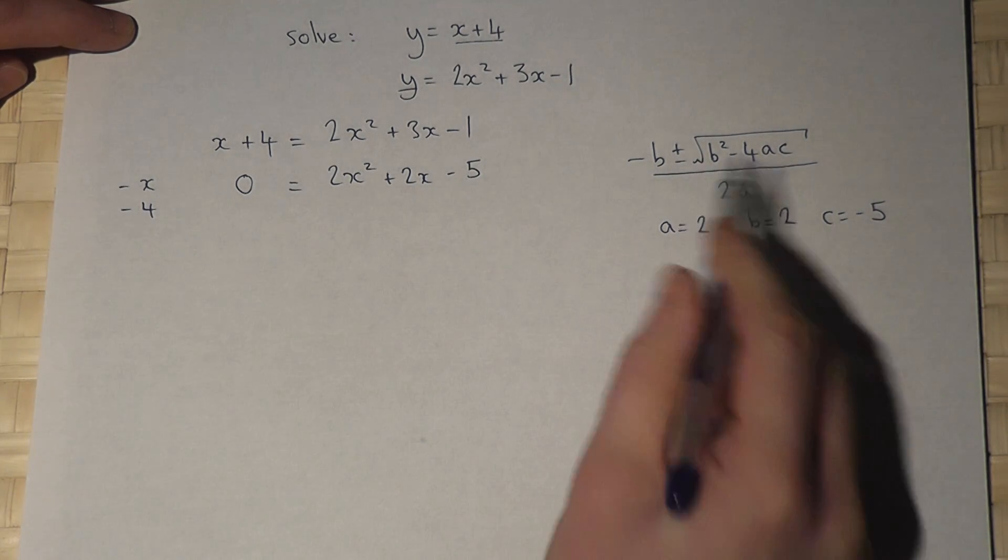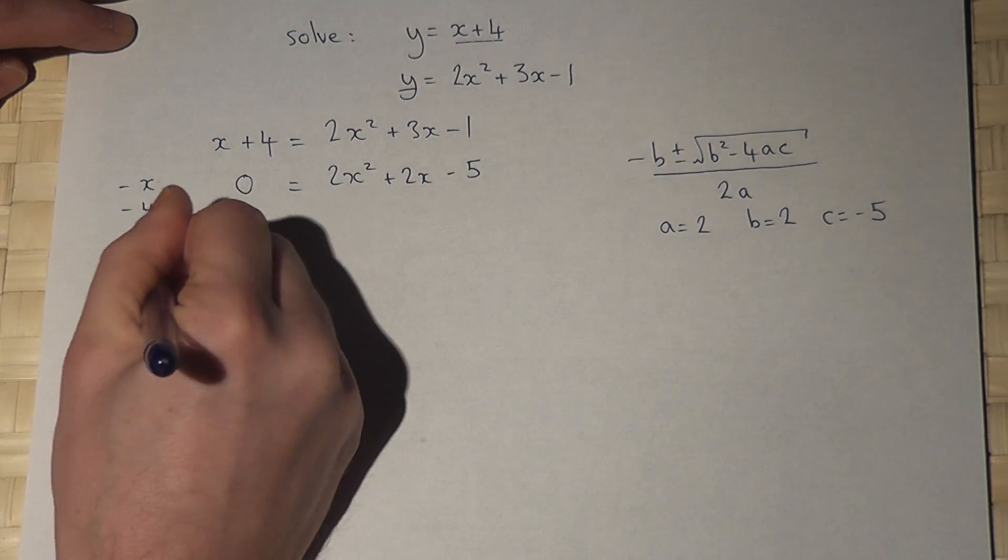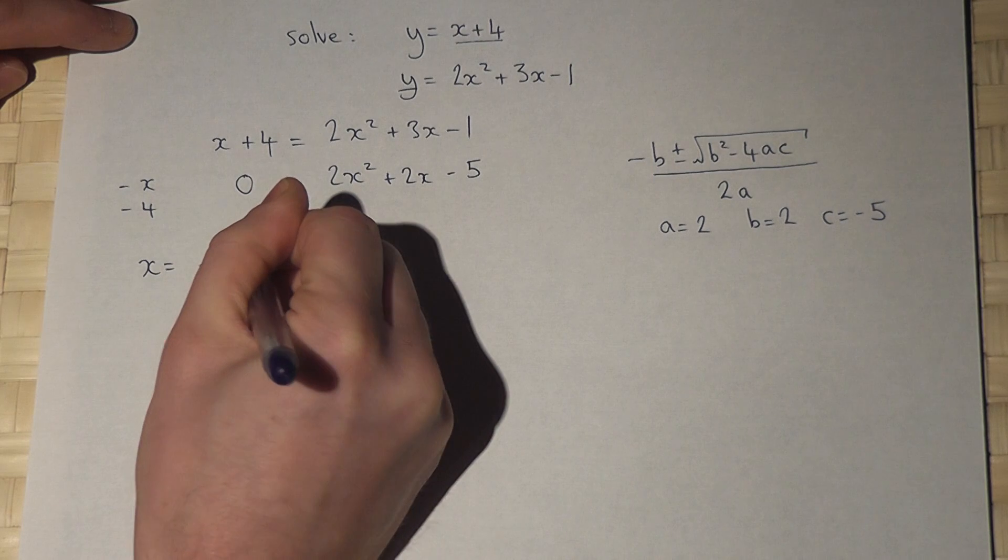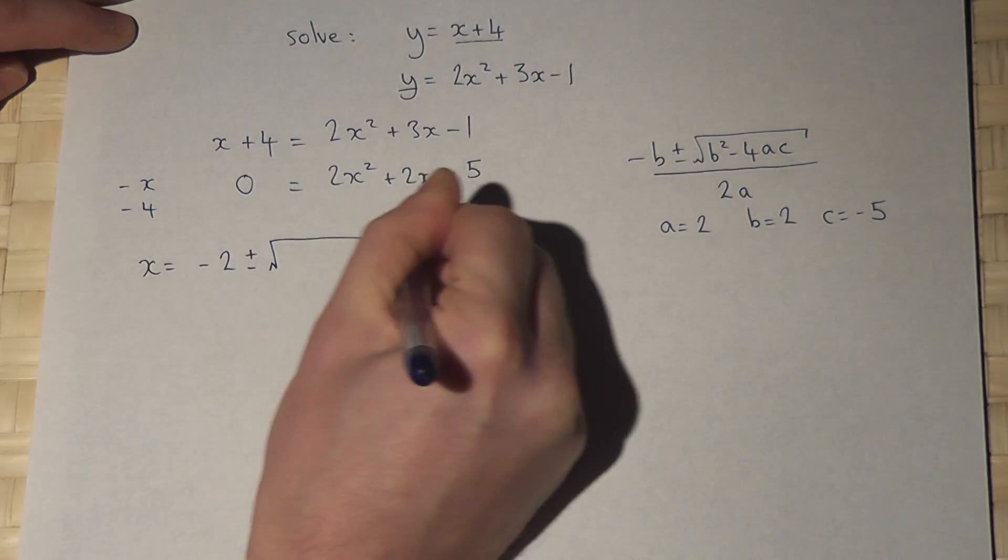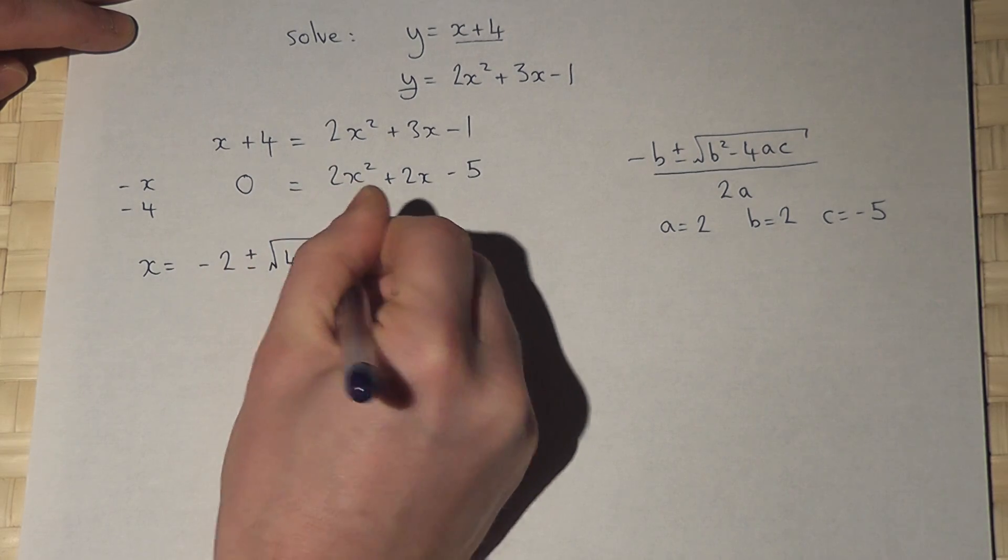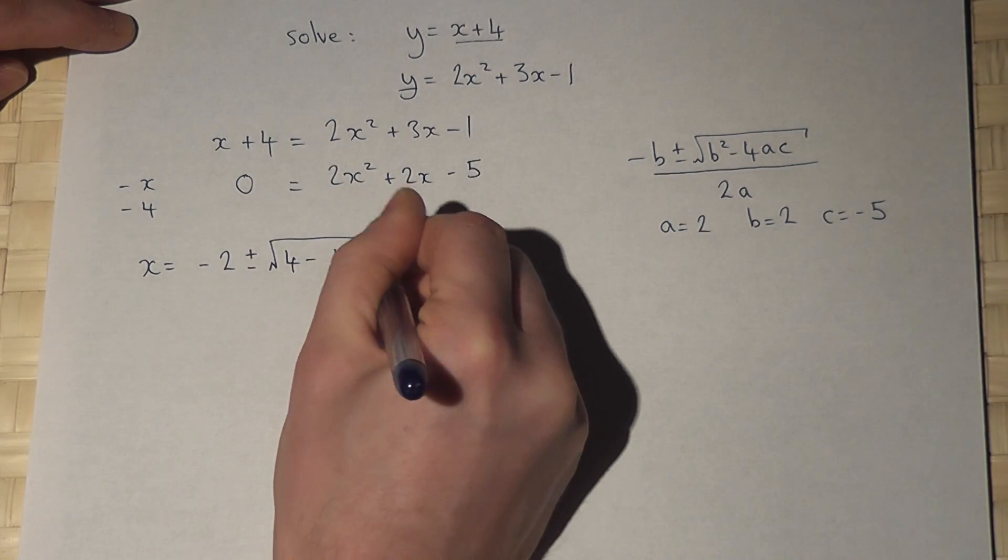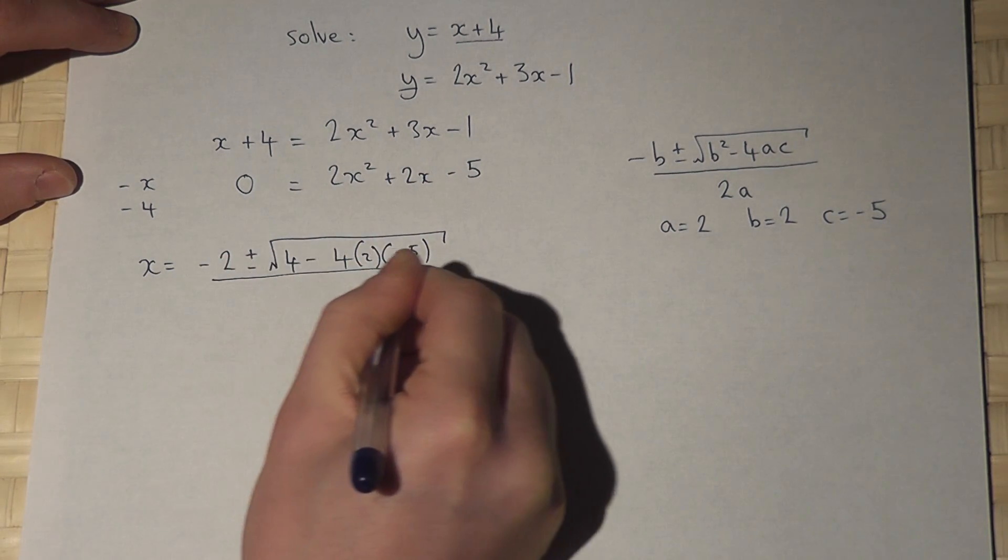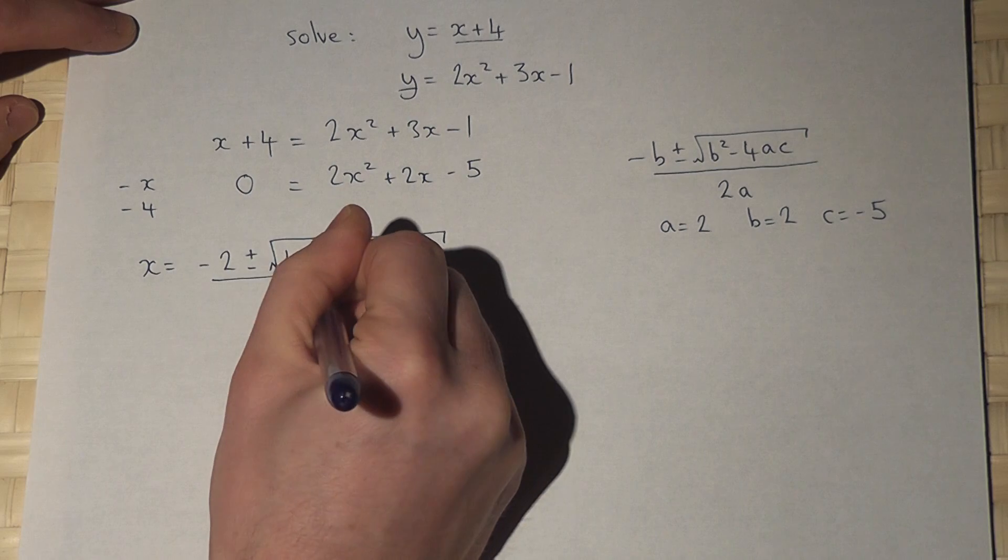So I put these values into the formula. So x will equal minus b. Well, b is 2, so minus 2, plus or minus the square root of b squared is 4, minus 4, times a, times c, which is minus 5, all over 2 times a, which is 4.